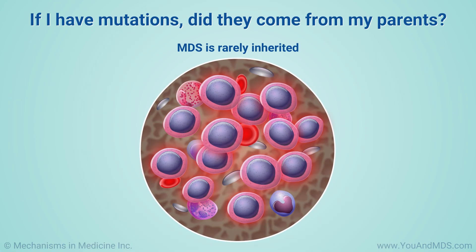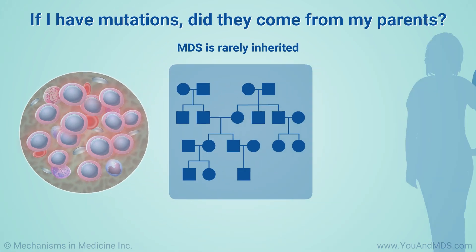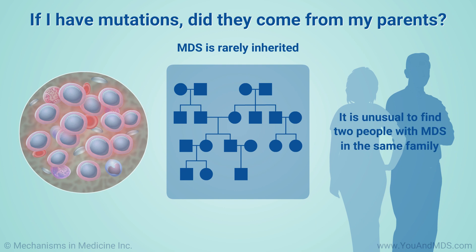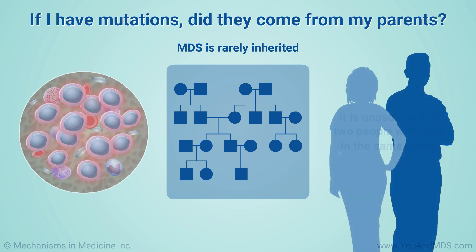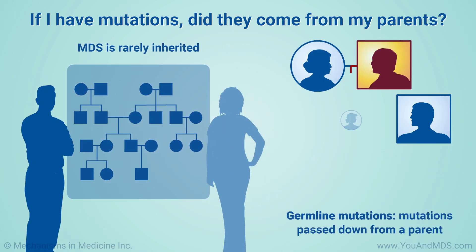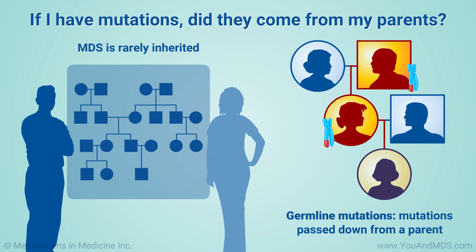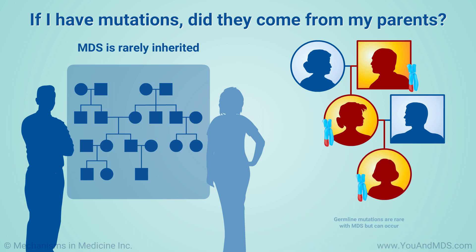MDS is rarely inherited. It is unusual to find two people with MDS in the same family. Mutations passed down from a parent are called germline mutations. They are rare with MDS, but can occur. So tell your doctor if there is a family history of MDS or other blood disorders.